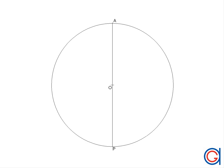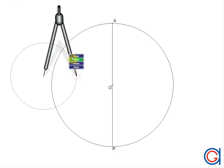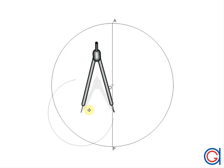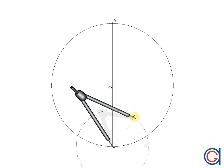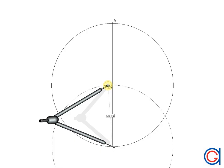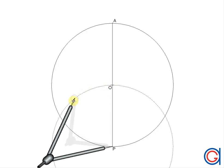The next step is to set our compass to the radius of the given circle. Now with our compass centered on point P, we are going to scribe an arc which cuts our circumference at two points, which we will call Q and R.